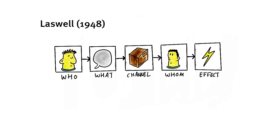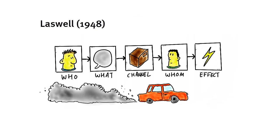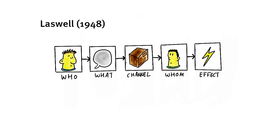Of course, many things can go wrong in this process of communication. When I talk to someone and a car drives by, it might cause a distraction, or its roaring engine might drown out my voice. My conversation partner can have other things on his mind, and there are many other things that can cause a disruption of effective communication. It's important to note that communication, in this linear way of looking at it, is only effective when the desired effect is reached — so when the message successfully reaches and is correctly interpreted by the receiver.